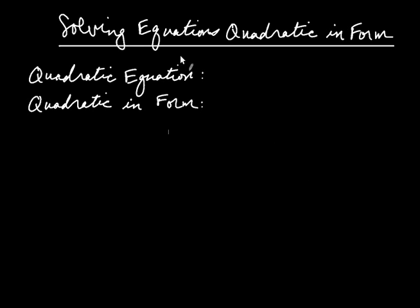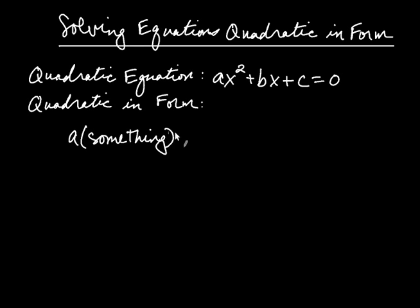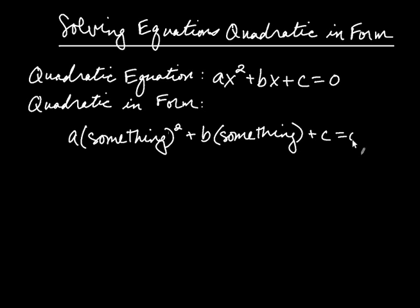Here we're going to talk about solving equations that are quadratic in form. First of all, do you remember what we mean by a quadratic equation? That's one where simply the variable has been squared. Generally speaking, it will look like ax squared plus bx plus c equals zero, where a, b, and c are real numbers. When we talk about an equation that's quadratic in form, all we mean is that the equation has the form: a times something squared, plus b times the same something, plus c equals zero.